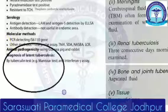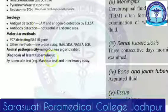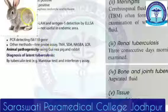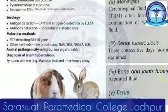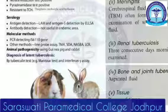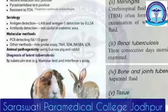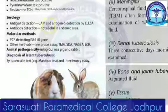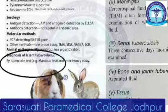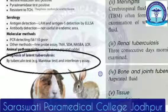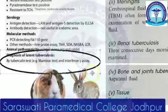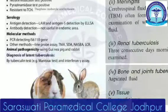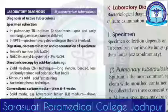Now moving to animal pathogenicity — you do animal inoculation on guinea pig and rabbit. Then for latent tuberculosis, you diagnose it by tuberculin test, Mantoux test, or interferon-gamma assay.